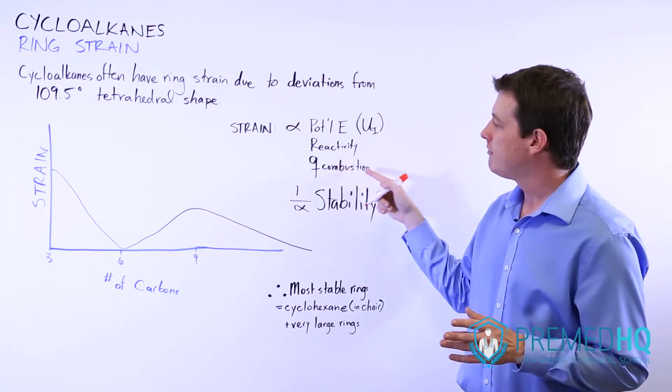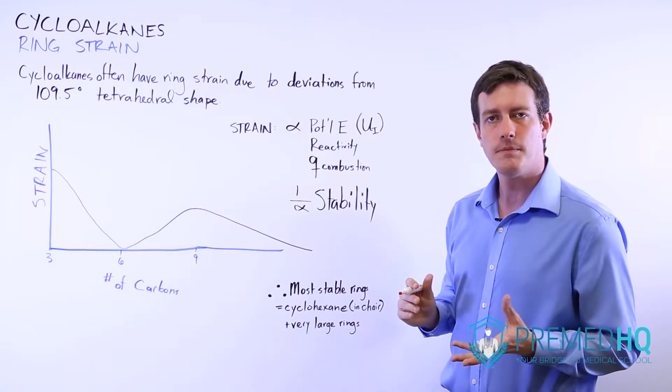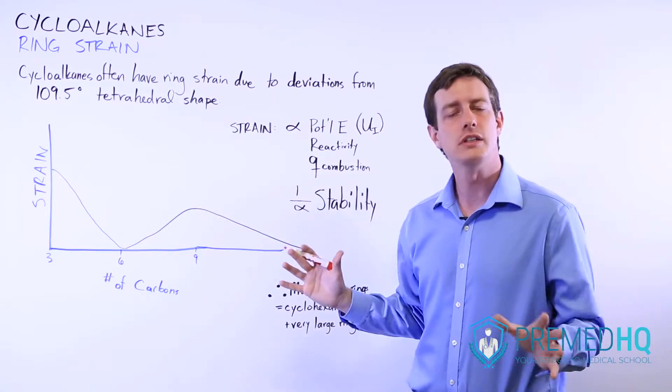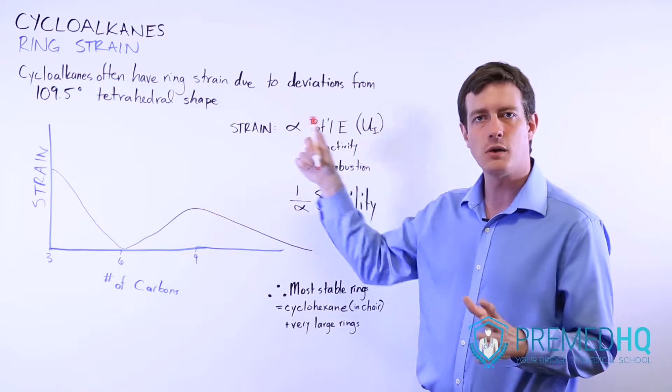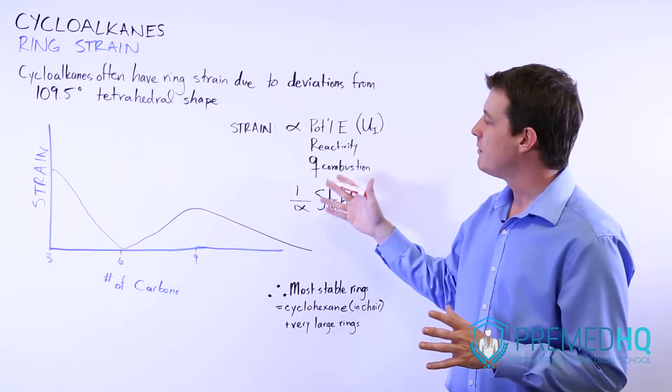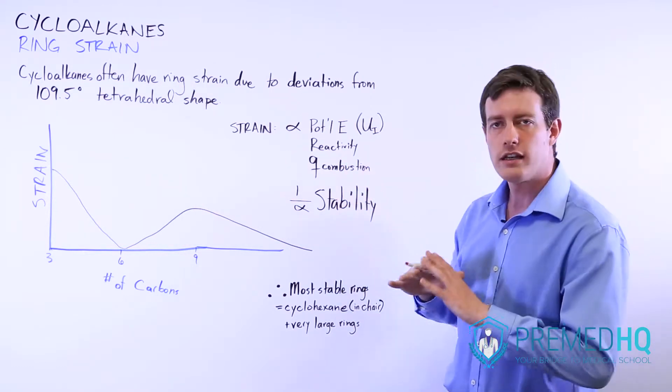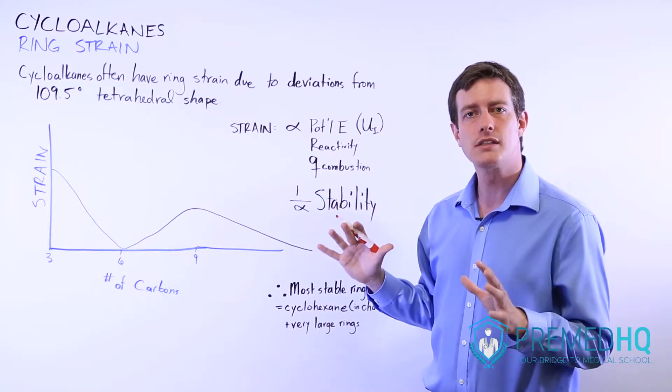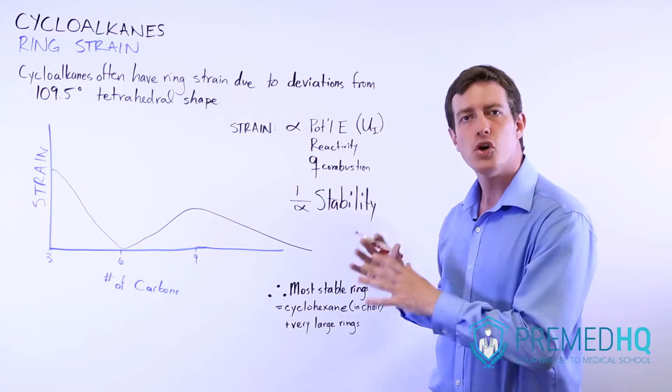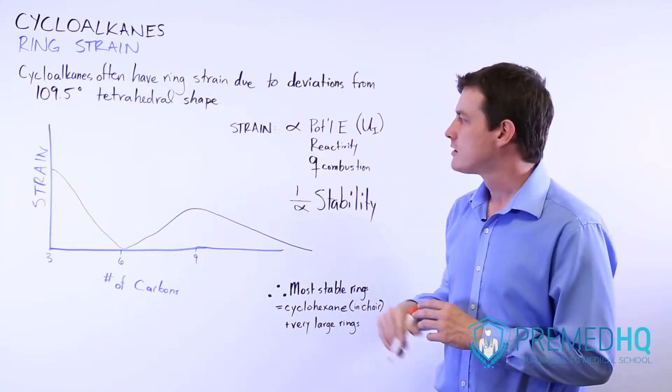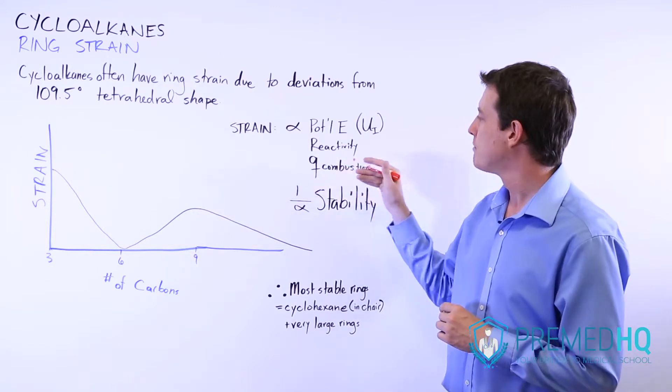And there's a feature known as the heat of combustion. The heat of combustion is the heat that's released when you combust a cycloalkane. Oftentimes they measure heat of combustion not in terms of overall heat, but instead in terms of heat per carbon containing group. So a lot of times it will be heat of combustion per carbon.